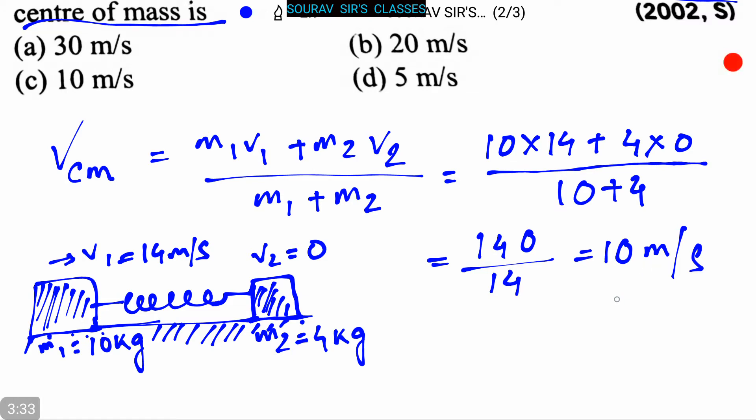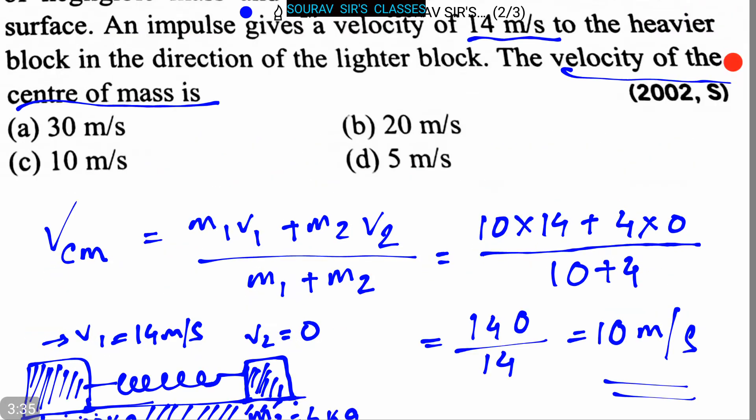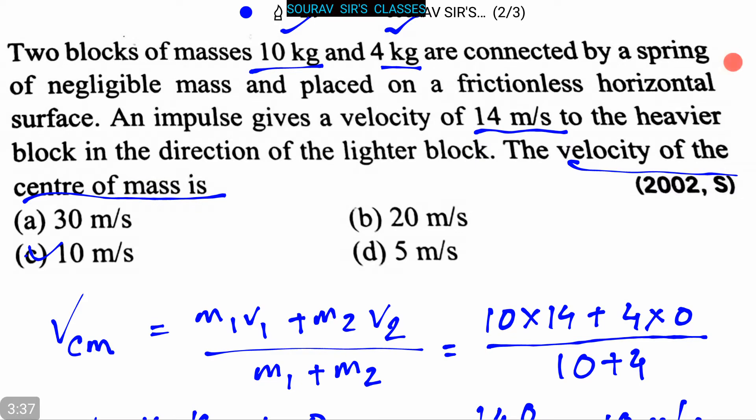So here our answer is 10 meter per second, that is option c. The velocity of the center of mass is 10 meter per second.